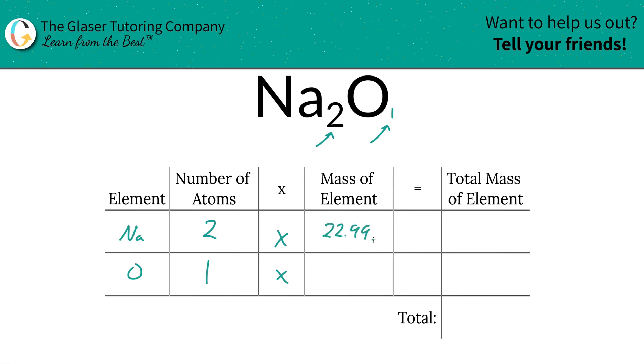So 22.99 for sodium, oxygen is going to be 16, and then we're simply going to multiply that row across to find the total mass of the element, and 45.98. That's what happens when your brain moves faster than your mouth. That's what you sound like.